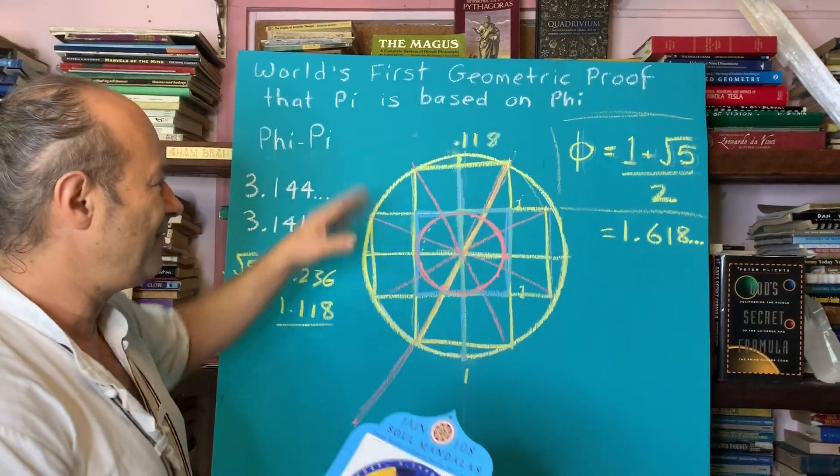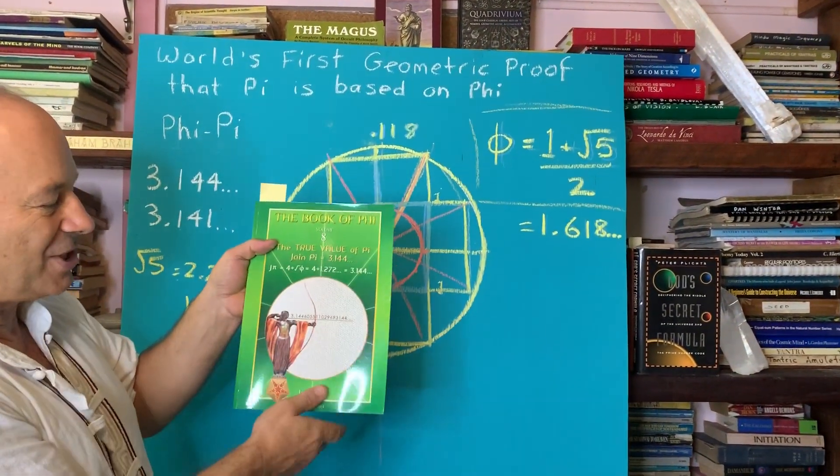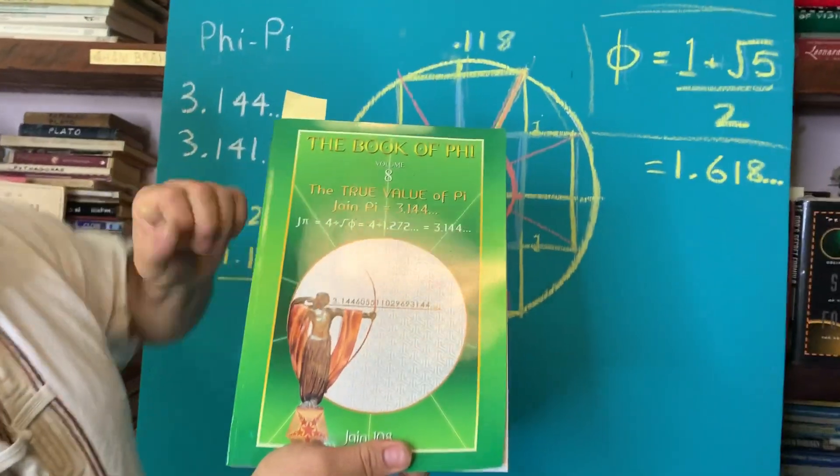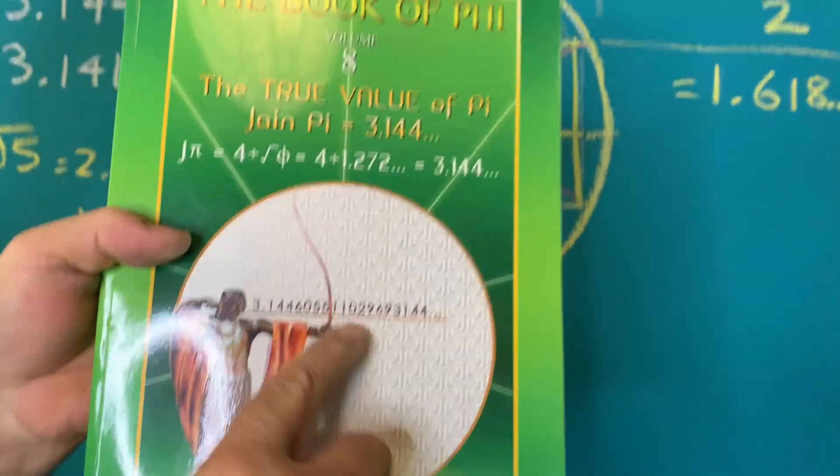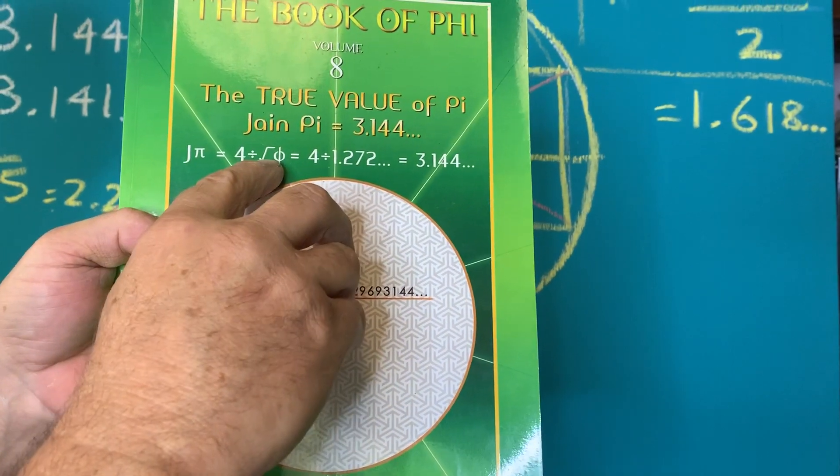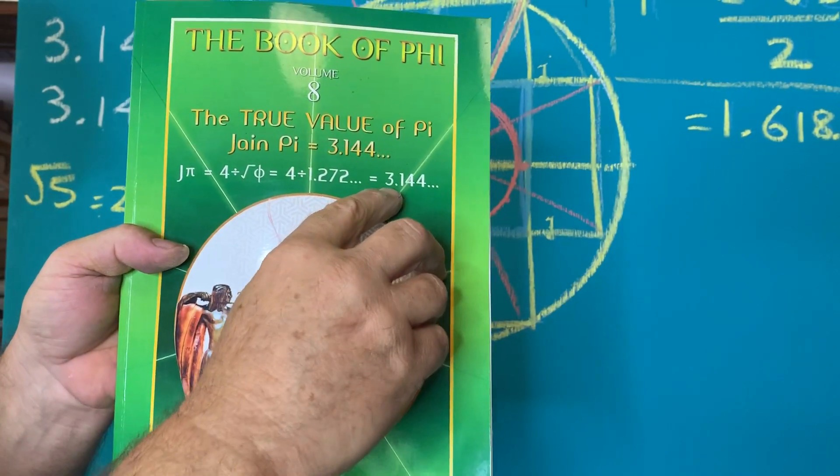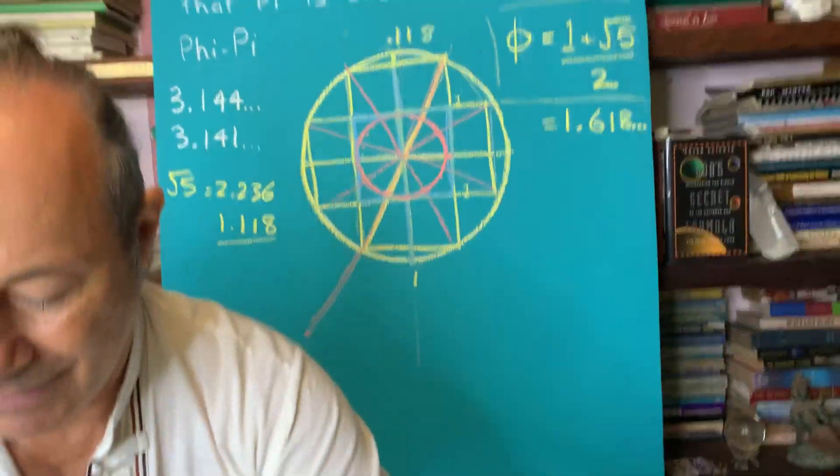So I've given this a name in my book. In my first book, it was called the book of phi volume eight. I showed there was an archer here ready to release 3.144. And that Jane pi is four divided by the root of five, which is the height of the pyramid gives 3.144. And it also comes in the second book.